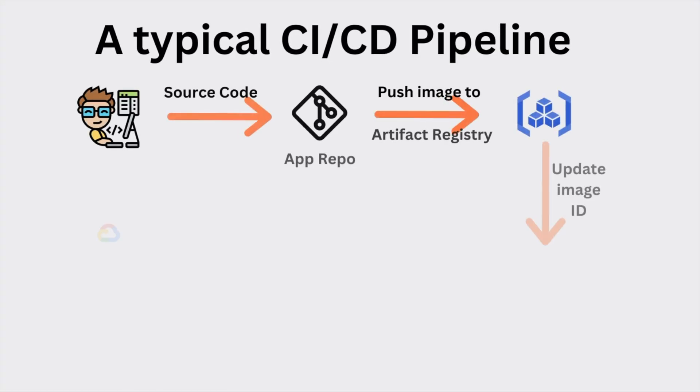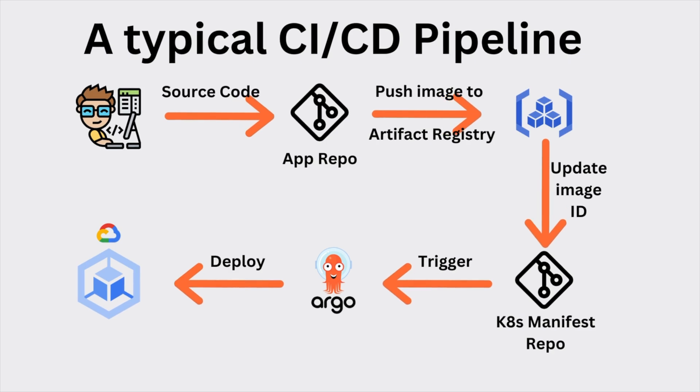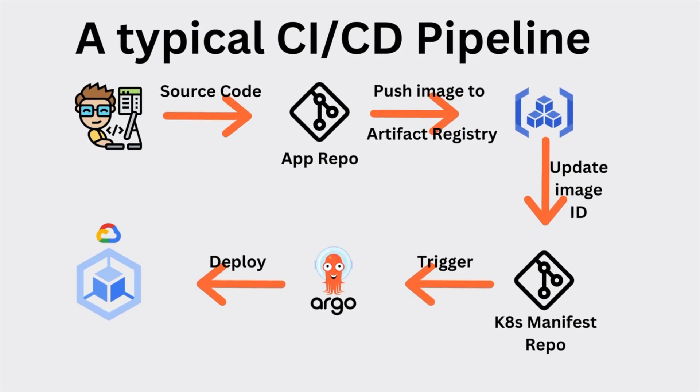In a CI/CD pipeline, the software engineer writes the code, it gets unit tested first, then we build a Docker image out of it, and then we deploy the Docker image to GKE or any other managed Kubernetes platform. The entire testing happens as part of this flow — development of the code, building of the image, deploying the image, and in between you may include something like security vulnerability scanning of the image, which goes into the area of DevSecOps.